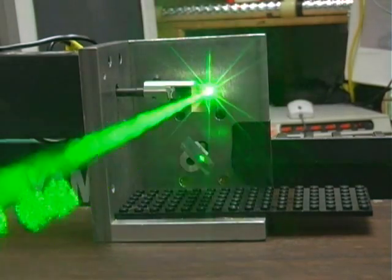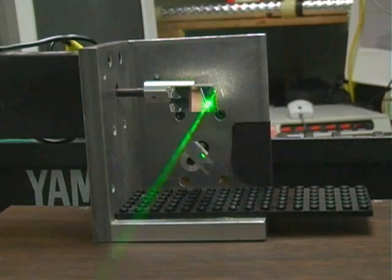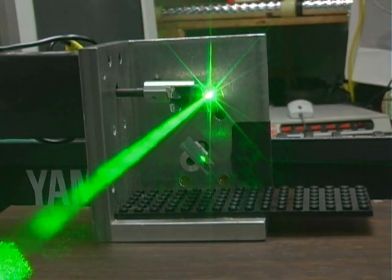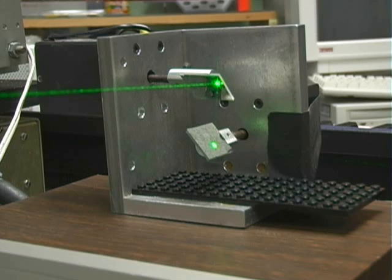These are general scanning galvanometers. You shine a laser so it hits one of the mirrors, bounces off that mirror, and hits a second mirror. One controls horizontal. The other controls vertical.